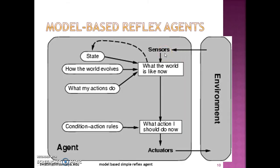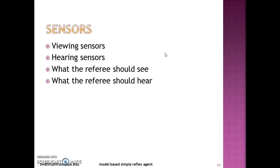The next part of the agent architecture is sensors, wherein this particular agent requires viewing sensors and hearing sensors. The problem definition limits what the referee should see and hear — the referee should see only the part wherein team members are gaining a point, making any misconduct, or checking the scoreboard.